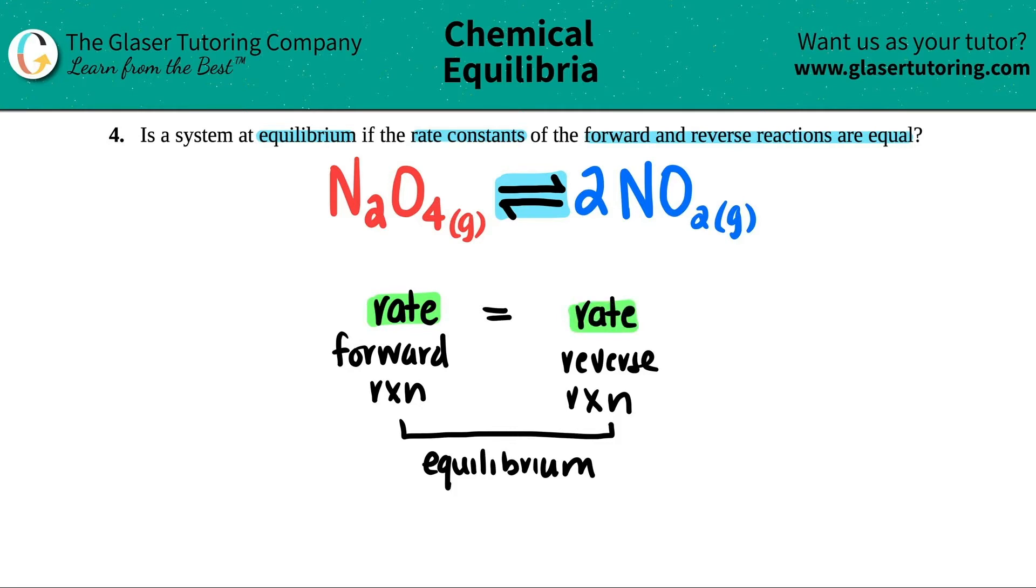But this comes up in chapter 12 with rate constants and rates. Remember that the rate constant and the rate have a formula: rate equals K times the concentration of the reactants, raised to their orders.